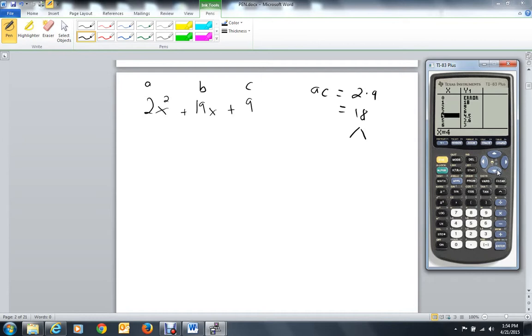So 1 and 18, 2 and 9, 3 and 6. I only want to look at the nice numbers. When I add the two pairs together, 1 and 18 gives us 19, which is what I want because I'm looking for the B.